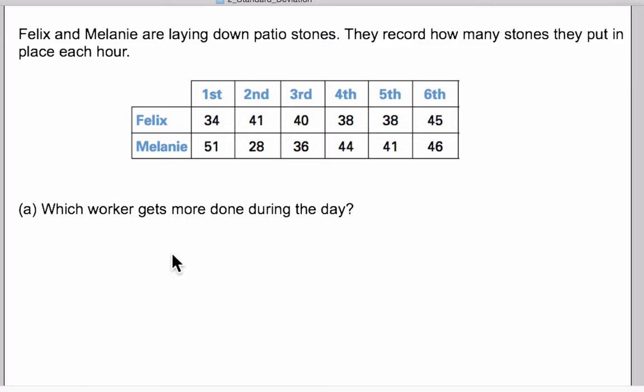Now if we ask the question: Felix and Melanie are laying down patio stones. They record how many stones they put in place each hour. Felix first hour puts in 34, then second hour 41, and so forth. The question is first off, which worker gets more done during the day? If you total up the number of stones that Felix puts down each day, Felix manages to place 236 stones. Melanie manages to put down 246 stones.